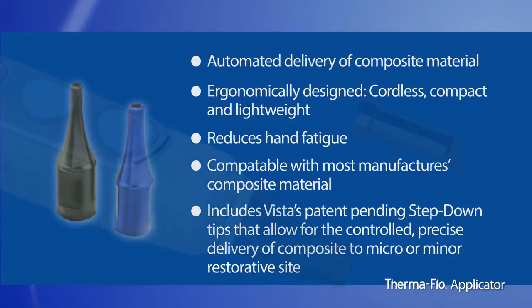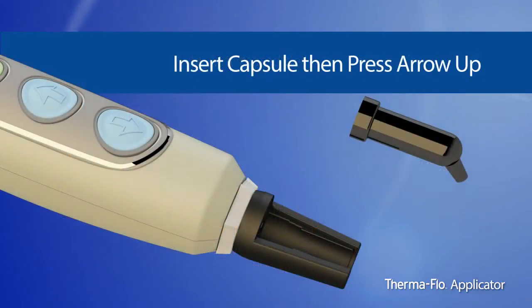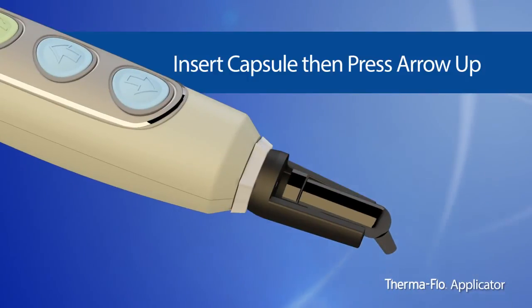To operate the handpiece, insert your preheated capsule in the capsule holder and press the arrow up button until the handpiece plunger fully engages the capsule.